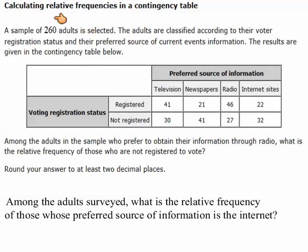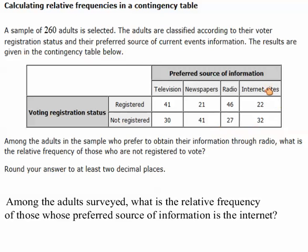Notice here that we have 260 total people surveyed. If we add up every one of these numbers, we would get 260 because that's the total sample. These are all the registered voters and these are the not registered voters, and here's how they prefer to get their information.